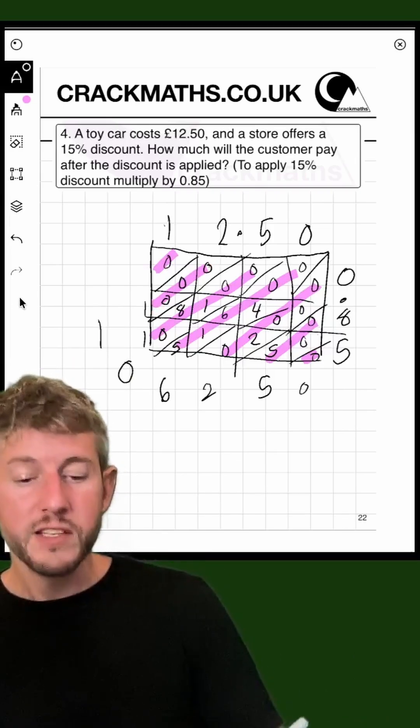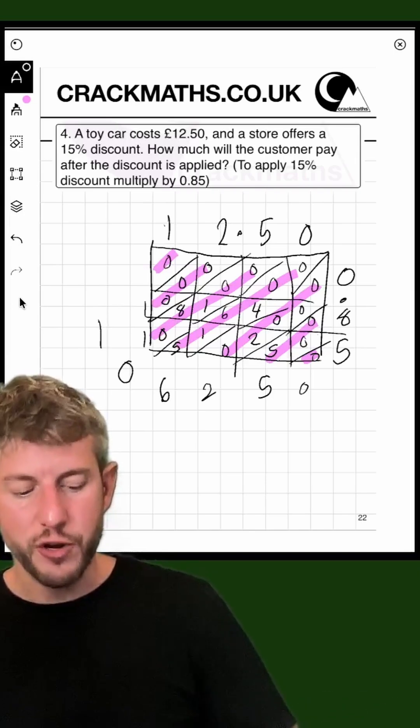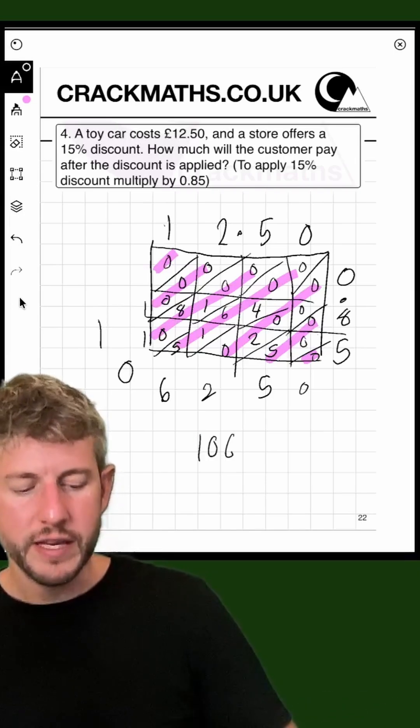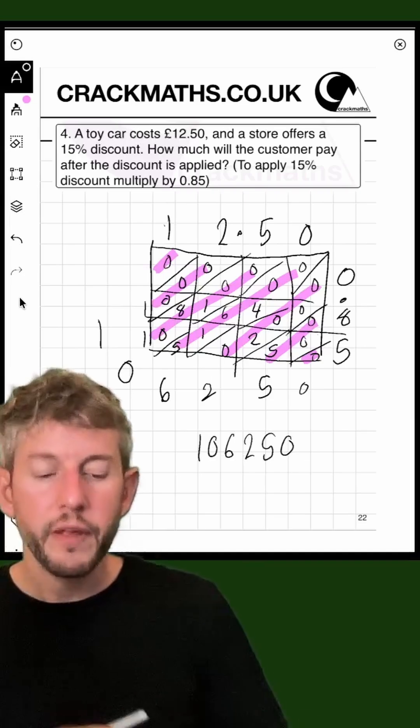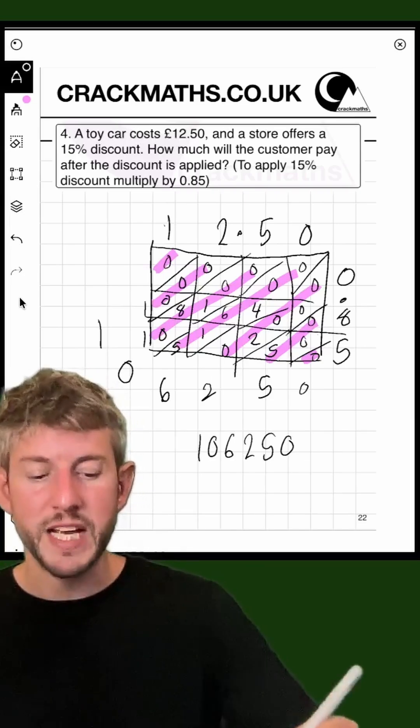So the digits to the answer of this question are going to be 1, 0, 6, 2, 5, 0. Now, the question is, where do we put the decimal point?